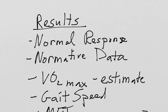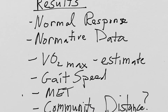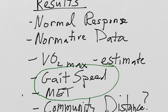You can estimate someone's VO2 max based on the six-minute walk test — most of that data has been done in heart failure and COPD individuals, but it is out there. Based on performance, you can look at gait speed by measuring how much distance they covered in six minutes, and using that gait speed you can estimate the metabolic equivalent, or MET level, they were at during the test.